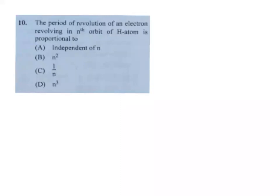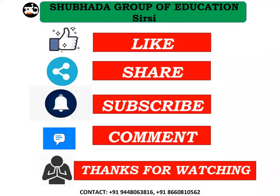10th problem: the period of revolution of an electron revolving in the nth orbit of a hydrogen atom is proportional to n cubed. Option D is the right answer. Thank you very much for watching this video. Please like, share with friends and colleagues, and subscribe to our channel. If you have any doubts, comment below so I can help. Wishing you all the best for your examinations and results.